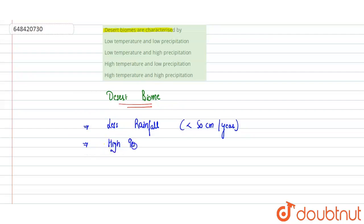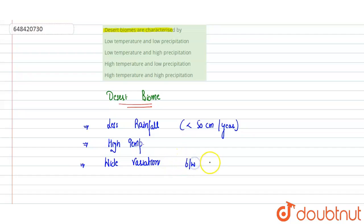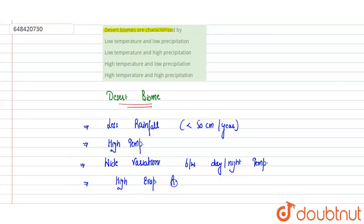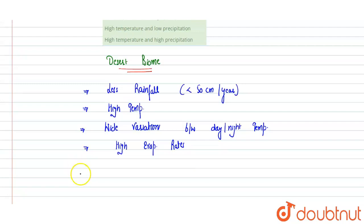Desert biomes are further characterized by high temperature. As we all know, deserts have high temperature, and temperature widely varies between day and night. In the day, temperature is very high, and at night, temperature is very low. Due to the presence of high temperature, they also experience high evaporation rates.